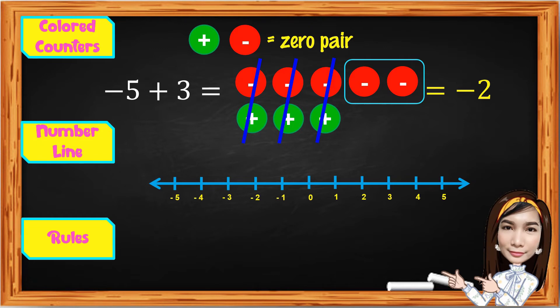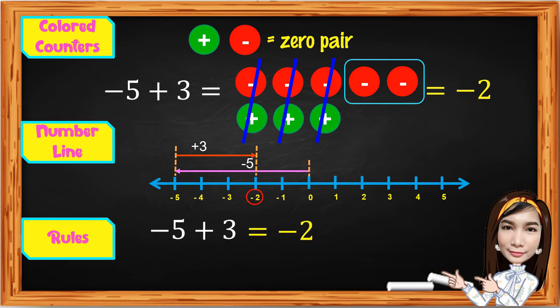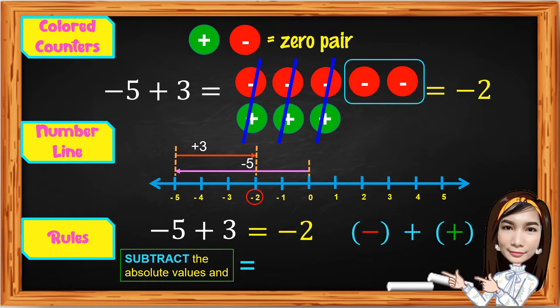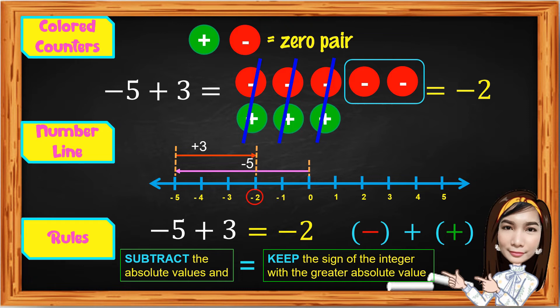Using a number line, start at 0. Move 5 units to the left for negative 5, then move back 3 units to the right for positive 3. It ends at negative 2. Thus, negative 5 plus positive 3 equals negative 2. The rule: subtract the absolute values — positive 5 minus positive 3 gives positive 2 — then keep the sign of the integer with the greater absolute value. Since negative 5 is greater in absolute value than 3, the answer is negative 2.